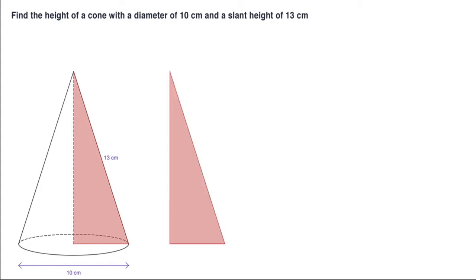I'll pop it over here and let's mark on what we know. Well we know that this length is 13 centimeters and this here will be the radius, so it's half of the diameter, so that is 5 centimeters. And what we're looking for is the height here, let's call that h.